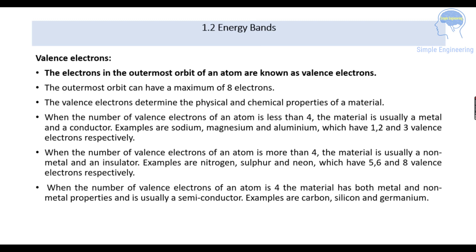When the number of valence electrons of an atom is less than 4, the material is usually a metal or a conductor. Examples are sodium, magnesium, and aluminium, which have 1, 2, and 3 valence electrons respectively.